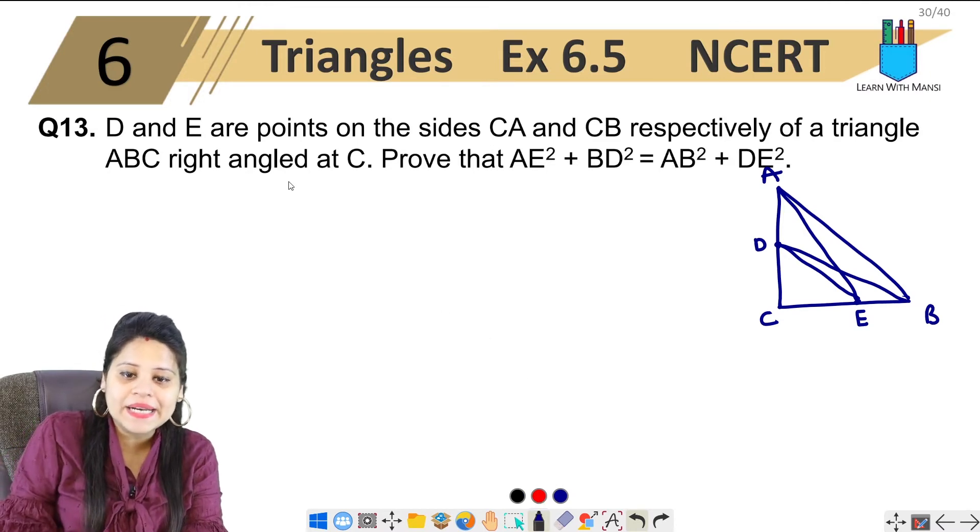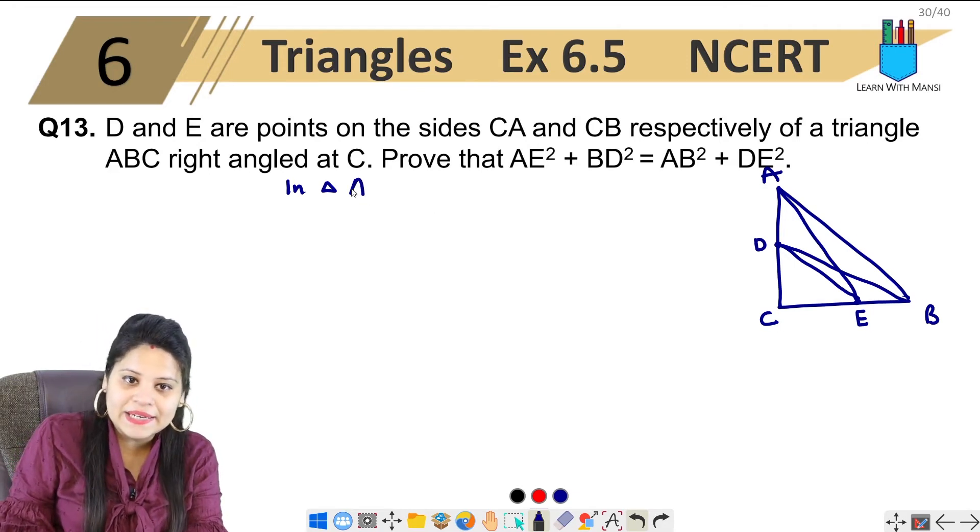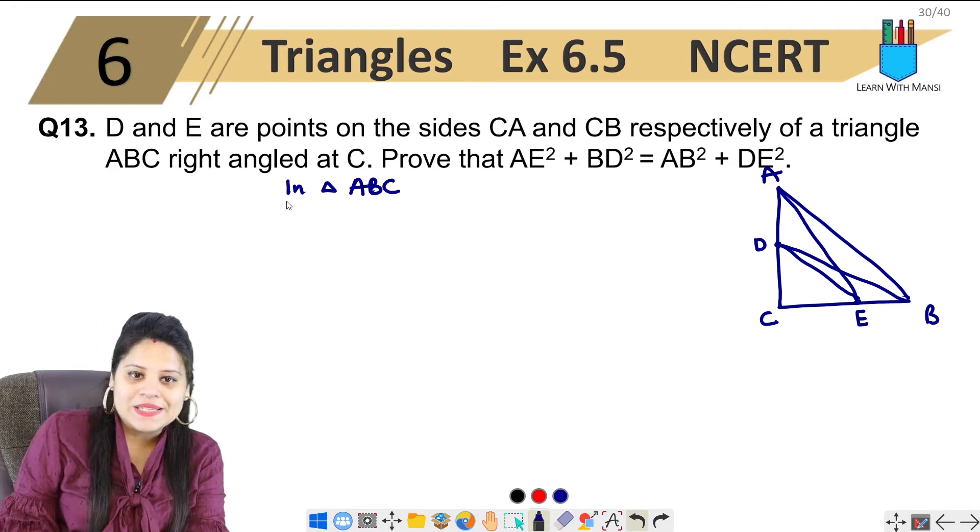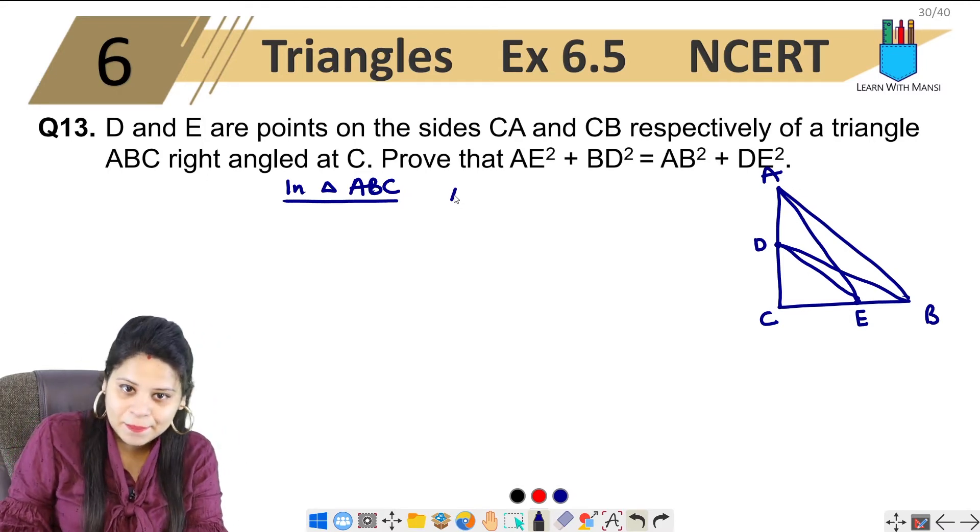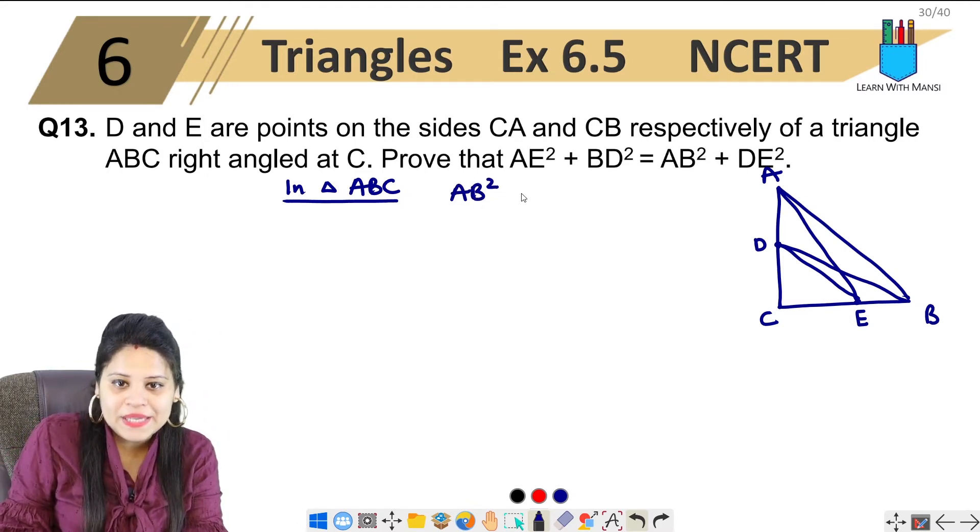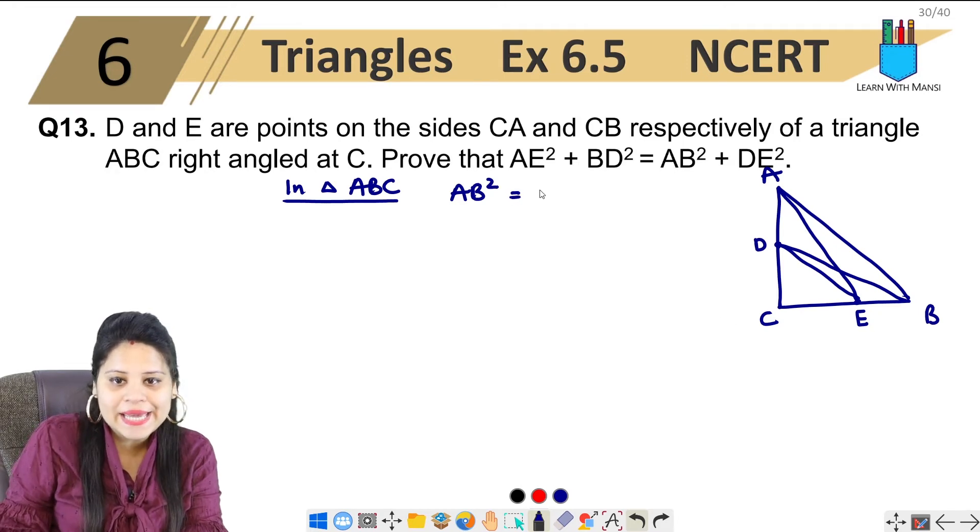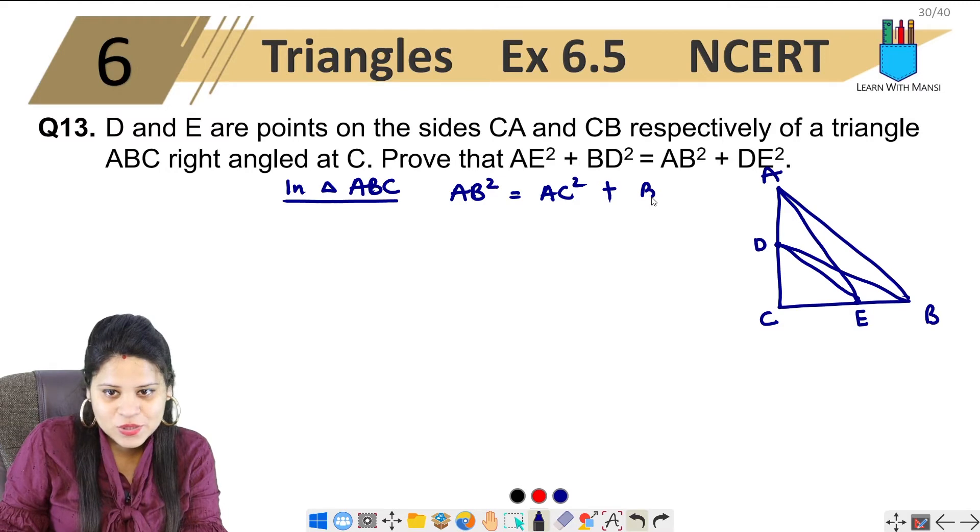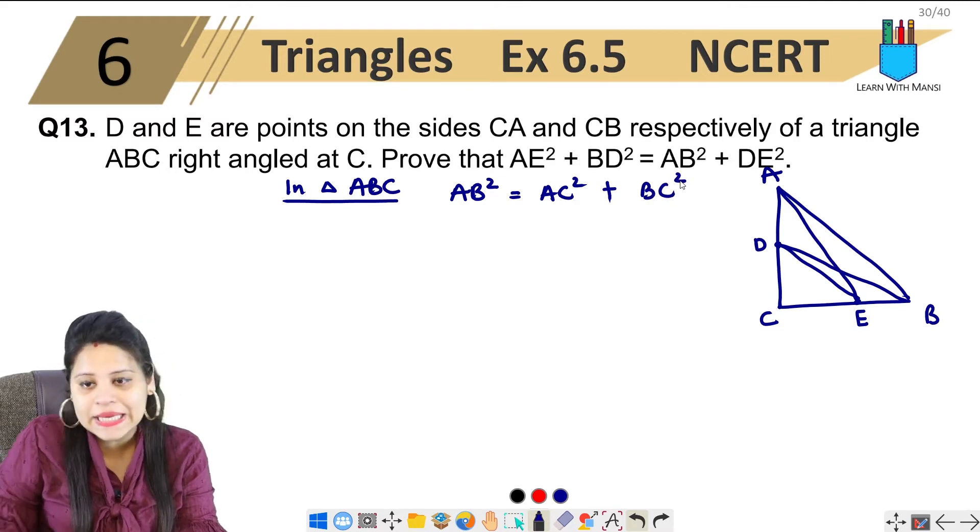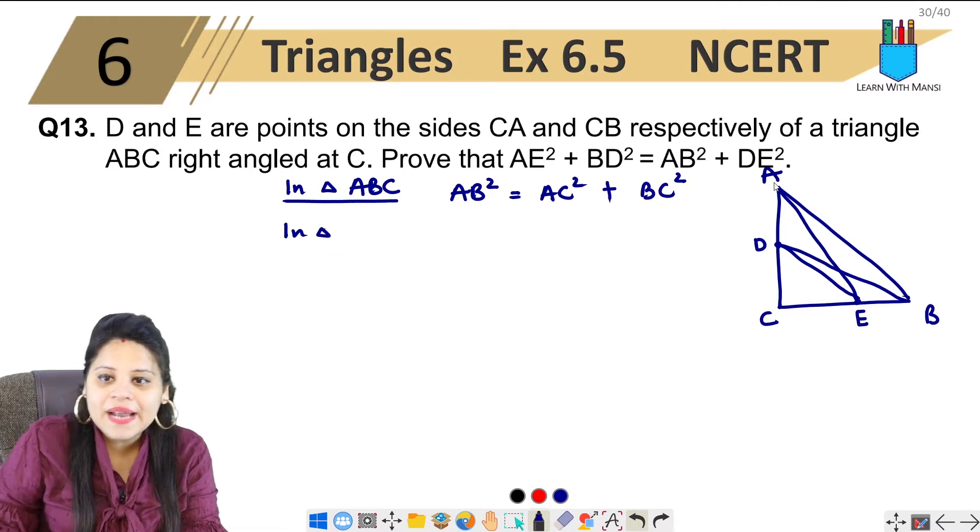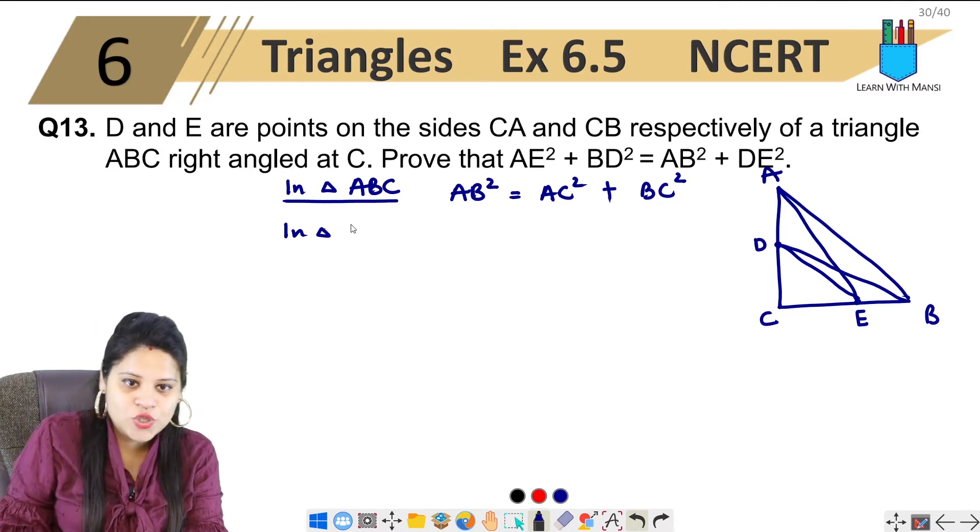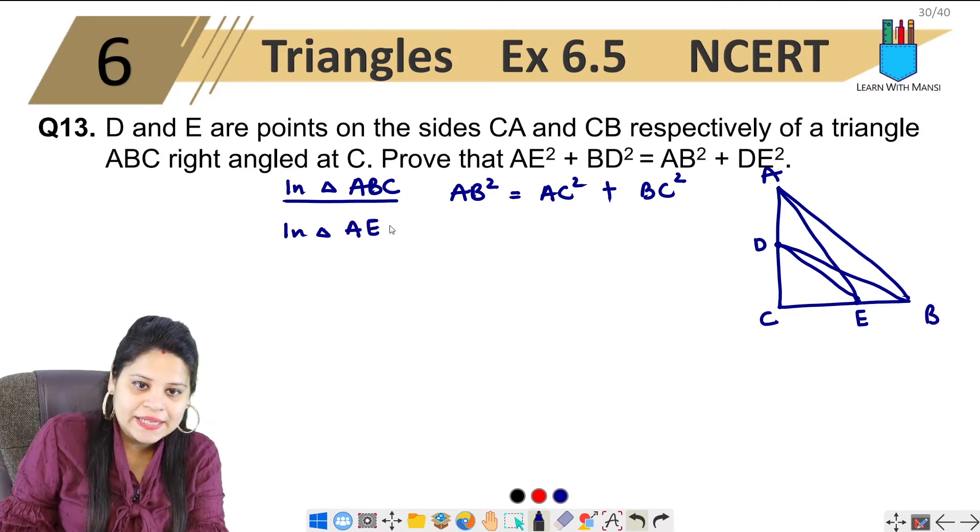So here we have all hypotenuses. So I will start with, we will take a triangle and put Pythagoras theorem. So in triangle, let's take the big triangle ABC. So what is hypotenuse in ABC? AB. So here AB square equals AC square plus BC square. Okay, there is no problem here.